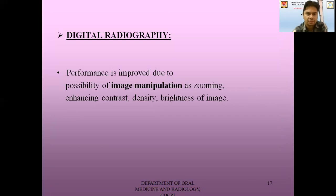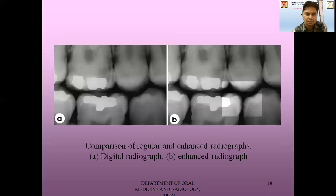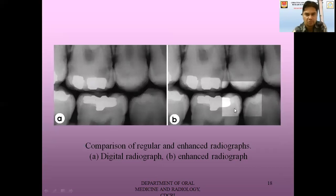Then there is digital radiography. In this, performance is improved due to the possibility of image manipulation such as zooming, enhancing contrast, density, and brightness. For example, here we cannot mark out any caries lesion on the standard image, but the main advantage of the digitized radiograph is that we can enhance the contrast. Once the contrast is enhanced, we can see a minute initial enamel caries on the mesial proximal surface of the molars.